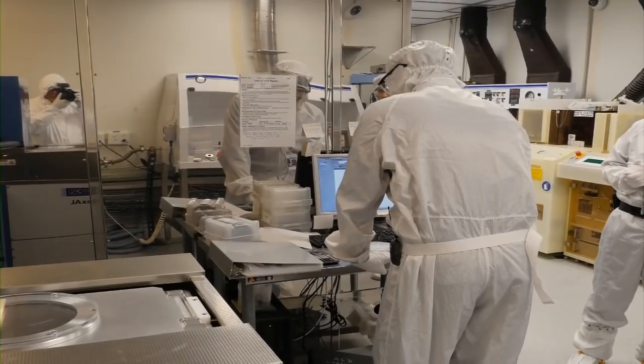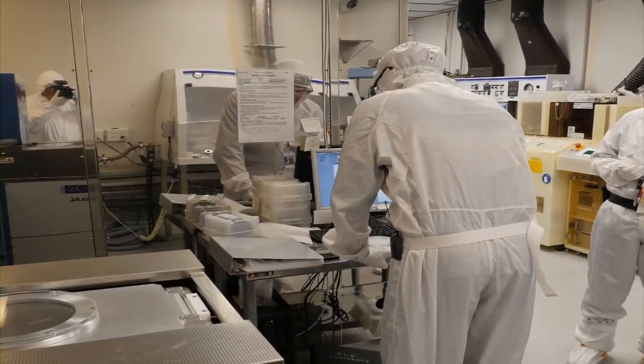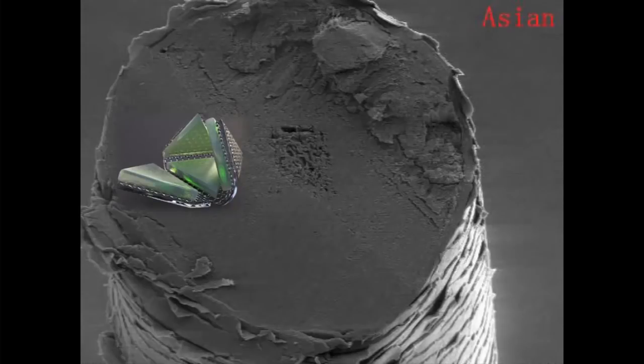In the nanofabrication facility here at Cornell, we could design a processor like the Intel 4004 that is small enough that it can fit on a machine, a device that we've made at the CNF, that is a fifth of a hair diameter.